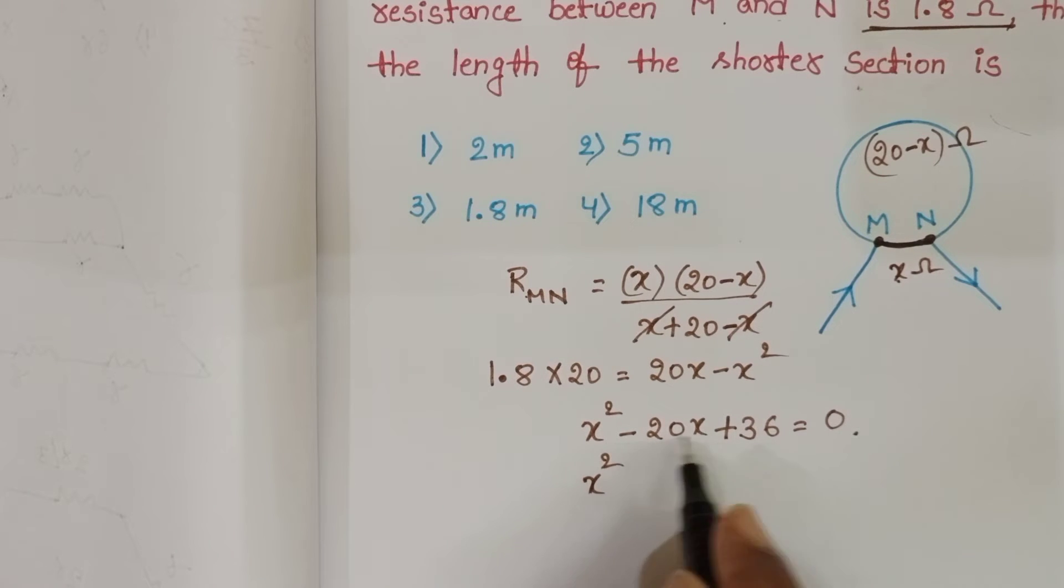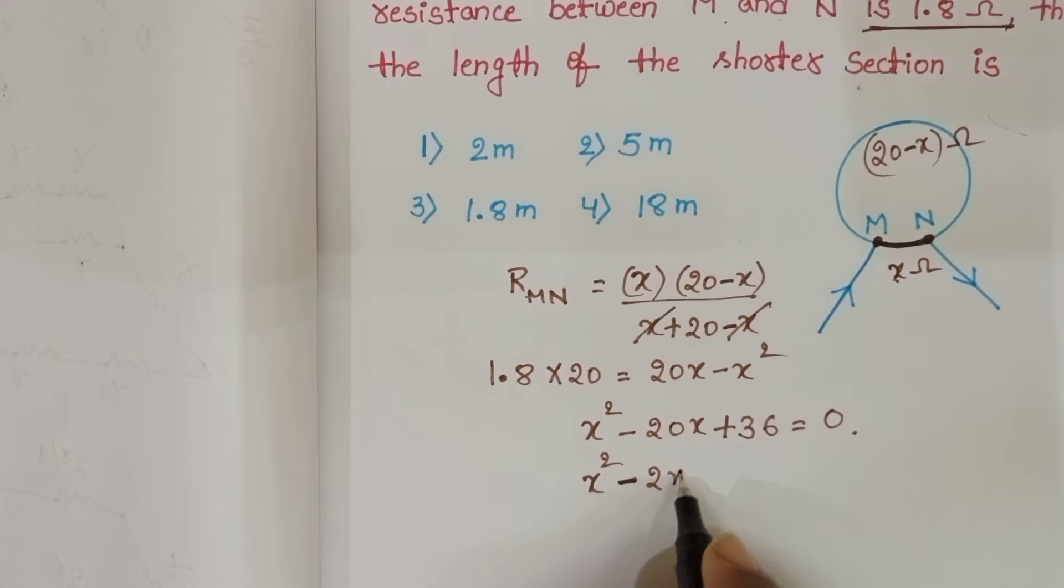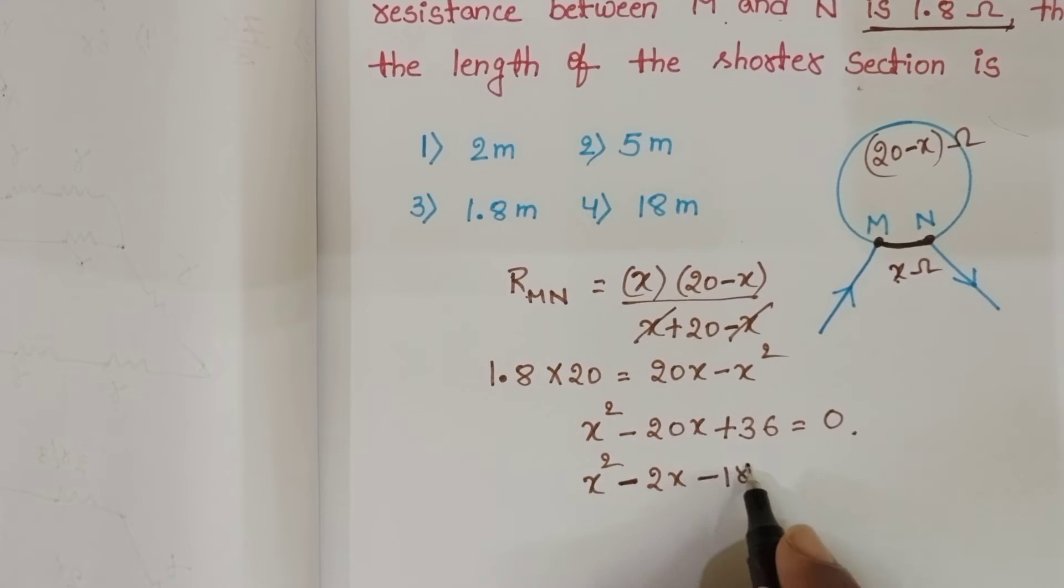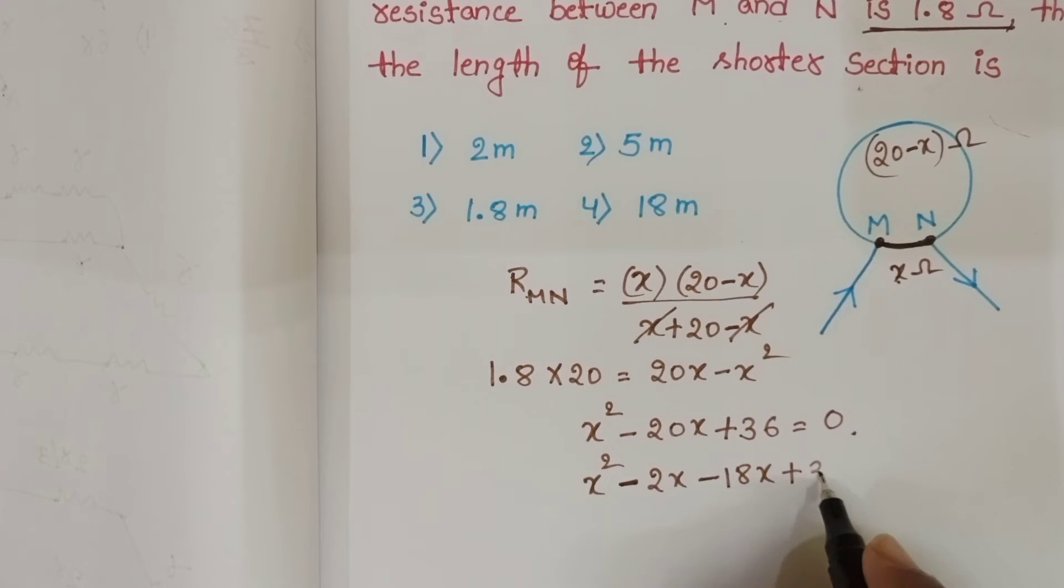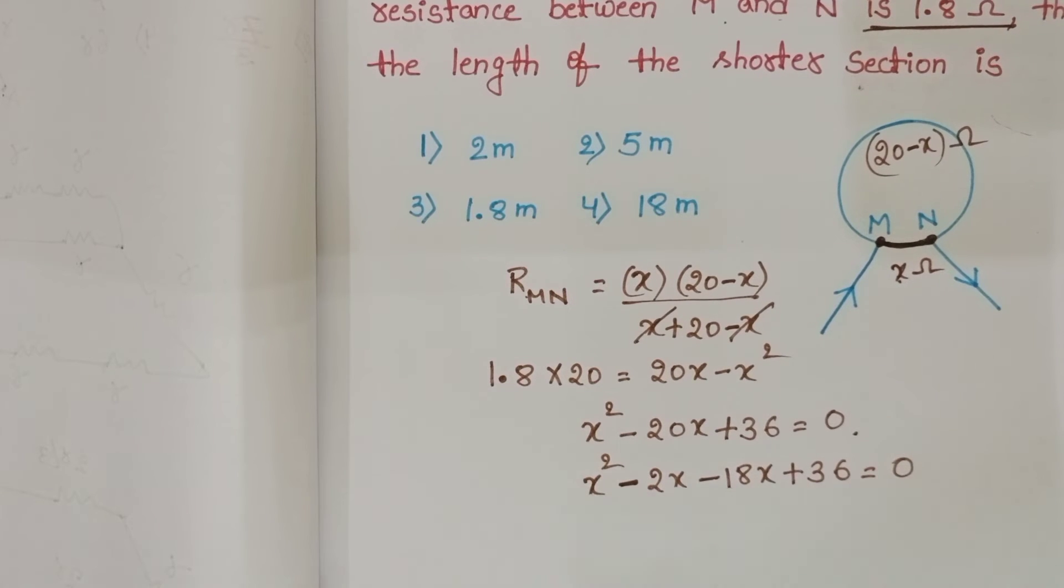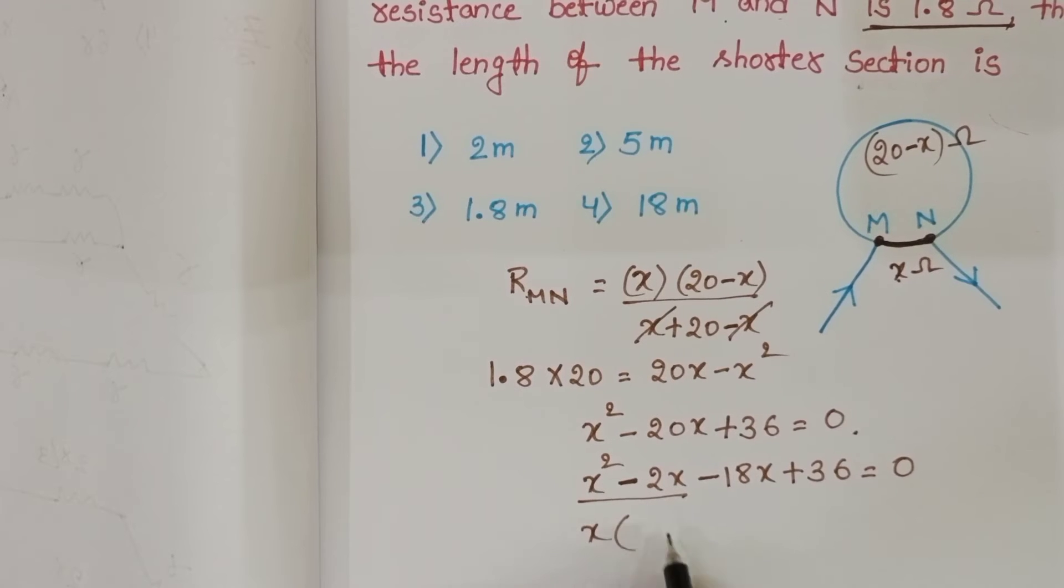Write in factored form: minus 2X minus 18X plus 36 equals 0. And from these two, take X minus 2.